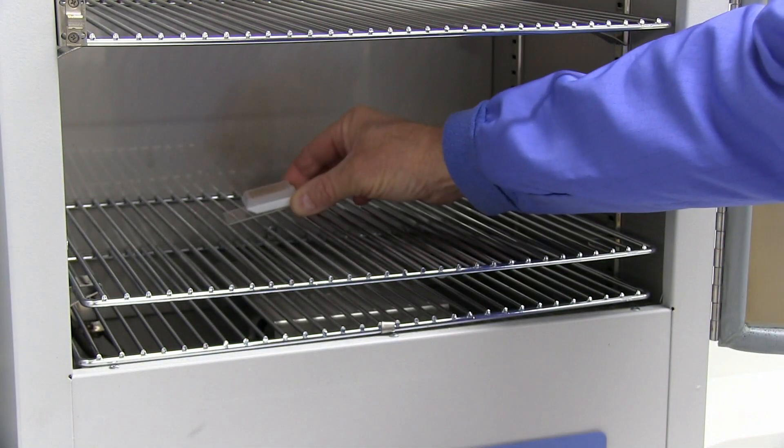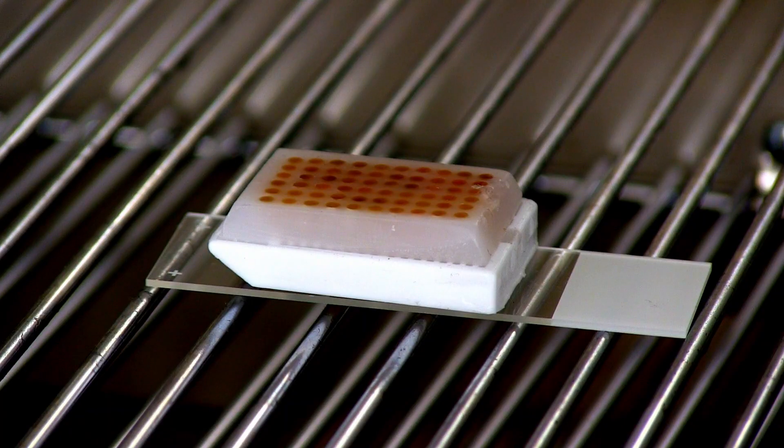As you can see, I put the paraffin block up instead of down. You put it down to set the punches. You put it up to warm the paraffin up.